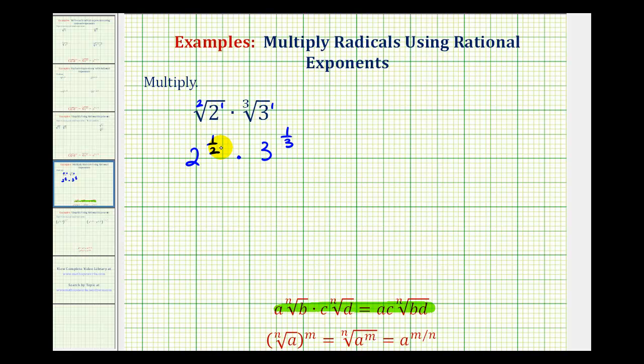So to rewrite one-half with the denominator of six, we can multiply the numerator and denominator by three. And for one-third, we can multiply the numerator and denominator by two. So now we would have two raised to the power of three-sixths times three raised to the power of two-sixths.